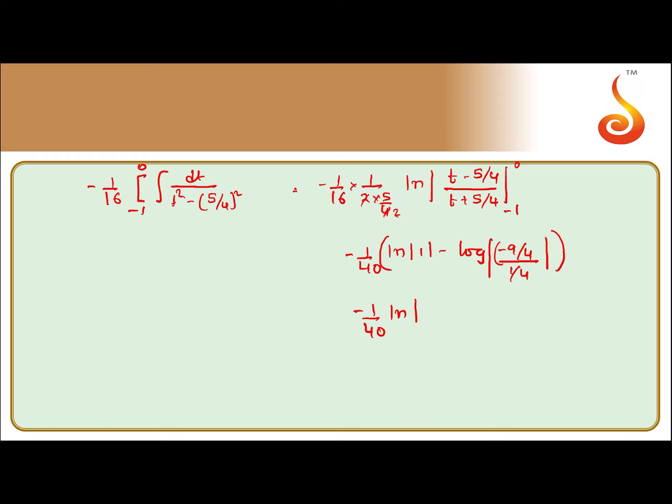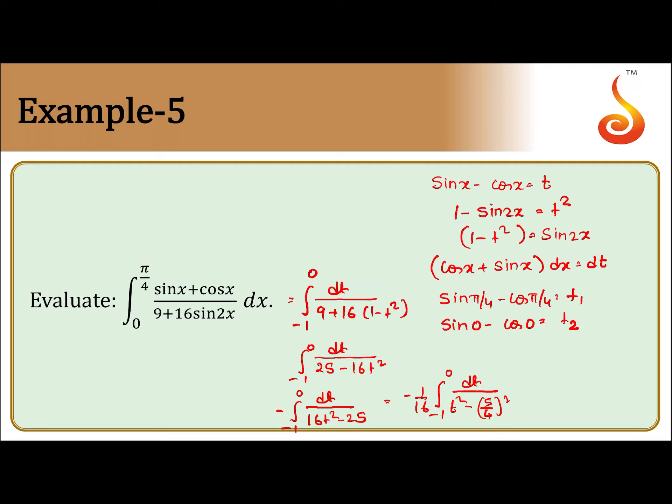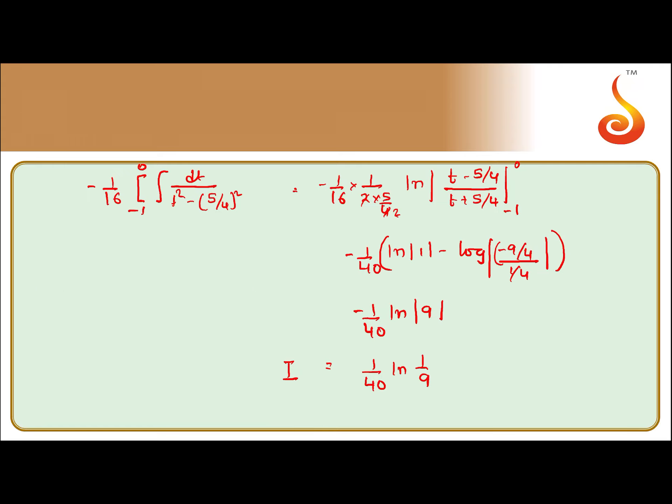Finally we get -1/40 log 9, or we can also say 1/40 log(1/9). This is the final result. So the basic idea is rearranging the derivative and we get our required result.